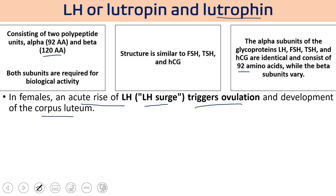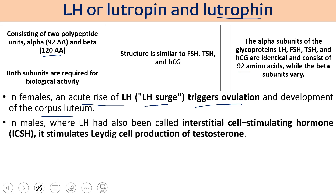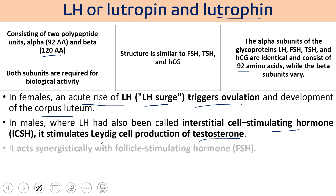The corpus luteum is the matured egg ready for fertilization, either fertilized or non-fertilized. In males, LH is also called interstitial cell stimulating hormone (ICSH), which stimulates Leydig cells for testosterone production. The key cells involved are Leydig cells and Sertoli cells in males, and theca cells and granulosa cells in females. FSH and LH both work synergistically.